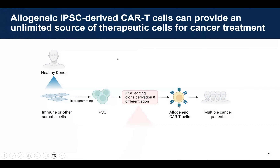Allogeneic iPSC-derived CAR-T cells is a cell-based therapy where cells are taken from a healthy donor, reprogrammed into induced pluripotent stem cells — so-called iPSC — which are then genetically modified with a CAR and additional edits that help prevent host rejection. Those cells are then differentiated into mature T cells and transplanted into patients to target and kill tumor cells. This strategy offers a way to produce genetically homogeneous cell products that can be scaled for an immediate off-the-shelf supply at relatively low cost.